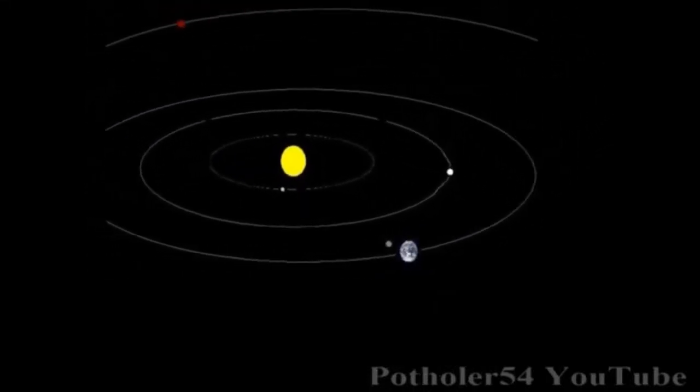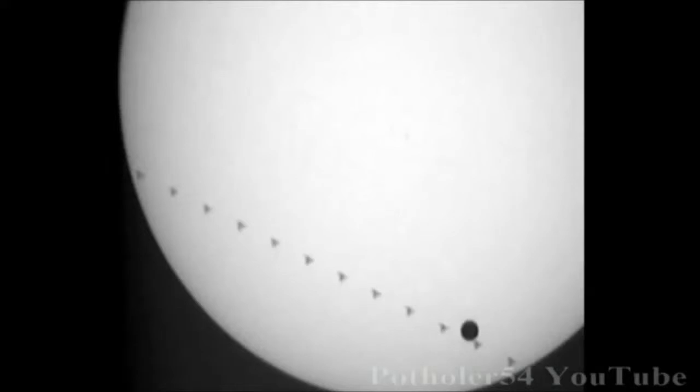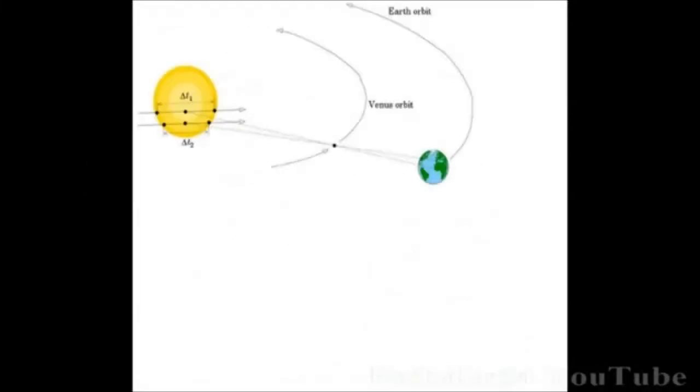In the 18th century, a transit of Venus across the Sun, timed at opposite ends of the Earth, made it possible to calculate the exact distance of the Sun, and by extension the distances of all the known planets.